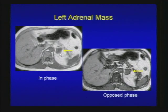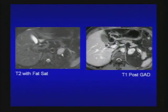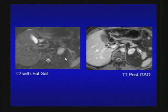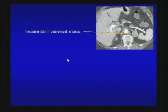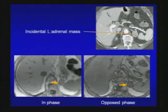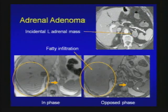Another case: incidental left adrenal mass. Does not have signal dropout on opposed-phase image compared to skeletal muscle or spleen — not typical for adrenal adenoma. On additional images it's fairly bright on T2 with fat saturation and shows homogeneous enhancement post-gadolinium. Differential: adrenal metastasis or pheochromocytoma. This turns out to be renal cell carcinoma metastasis, and on CT four months after chemotherapy the adrenal gland returns to its normal shape. Another incidental left adrenal mass demonstrates signal loss on opposed-phase imaging compared to the adjacent spleen — consistent with benign adrenal adenoma. Note the fat infiltration of the liver on opposed-phase imaging, emphasizing that the liver should not be used as a reference.